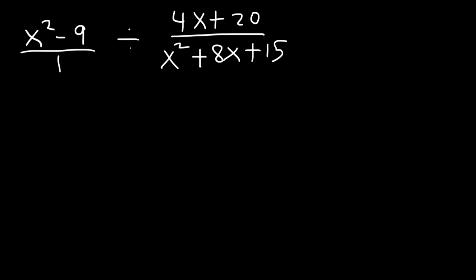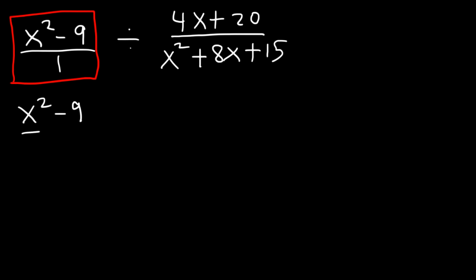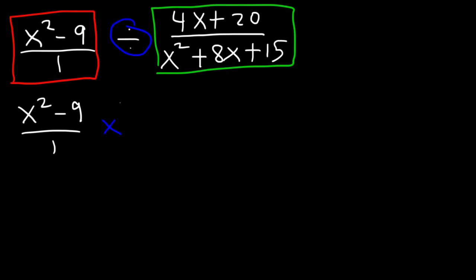Perhaps you've heard of the expression keep change flip — here's how you use it. Keep the first fraction the same, change division to multiplication, and then flip the second fraction. Now all we need to do is factor and cancel.